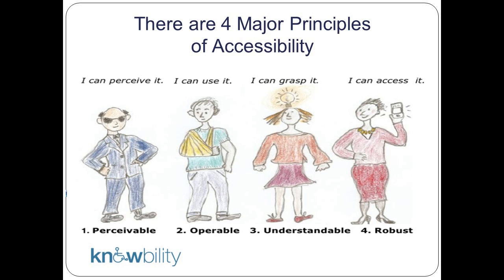What is useful to start with are the principles of accessibility, because all of those technical specifications that get overwhelming are based on these four principles. You're making content that is perceivable — any person can perceive that content regardless of how they perceive, whether through vision, through hearing, or maybe they don't hear or see and they use braille output devices. Perception is the number one principle.